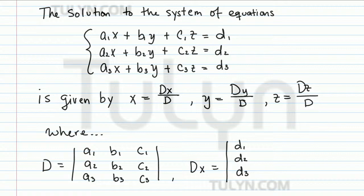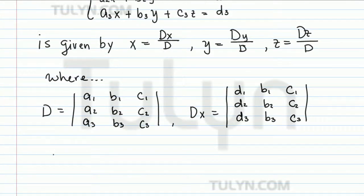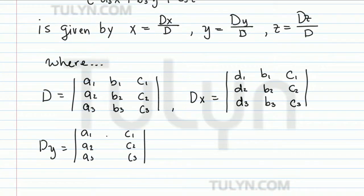And then you write the coefficients of y and z as usual. Now for Dy, as you can expect, it works the same way. So you write the coefficients of x and z, but then the coefficients of y, you replace it with the constant terms d1, d2, and d3. So d1, d2, and d3. And finally,